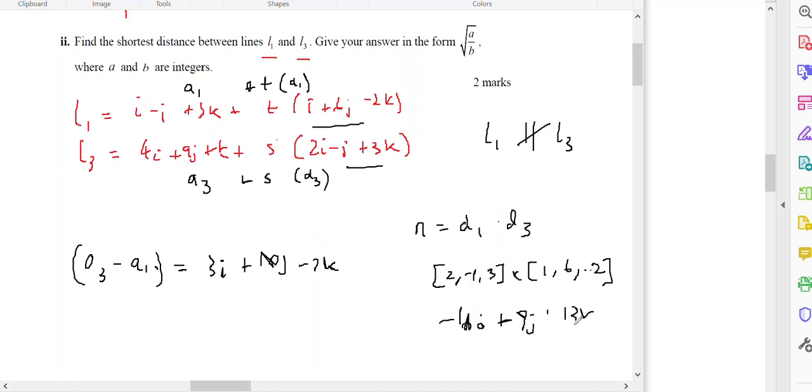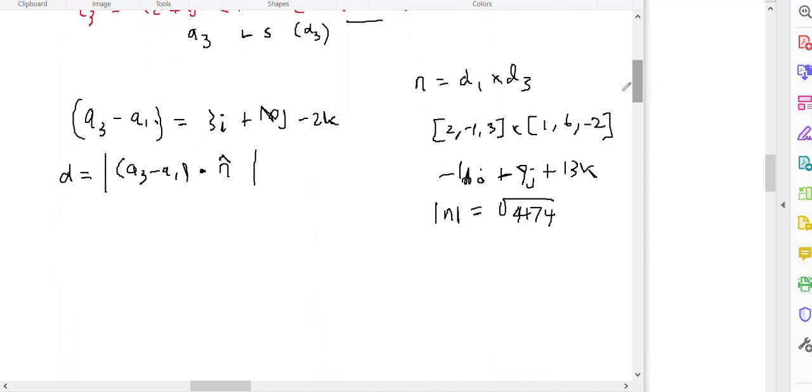So my distance is going to equal the magnitude of a3 minus a1 dot product n hat, which is going to give me 3i plus 10j minus 2k dot negative 16i plus 7j plus 13k all over the square root of 474, which on a calculator gives you the square root of 16 over 474, which is the square root of 8 over 237.